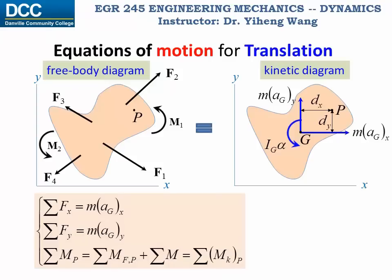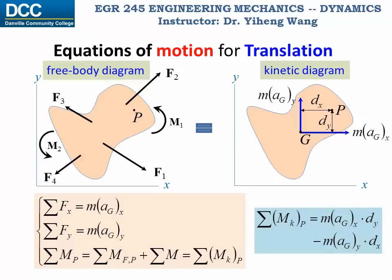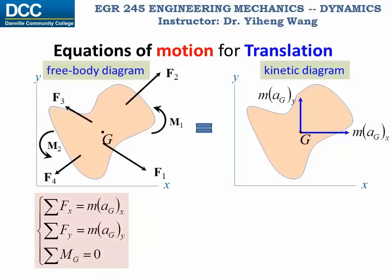If the rigid body is undergoing translation — meaning the body is not rotating about any axis — then the rotation term I_G·alpha disappears from the kinetic diagram. Therefore, in the equation of resultant moment about point P, the kinetic moment only includes the moment caused by the two inertia forces ma_Gx and ma_Gy. Or, if the resultant moment is summarized about point G, the mass center, then the resultant moment simply equals zero.